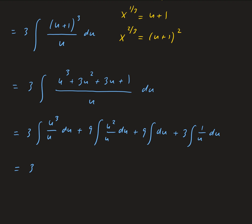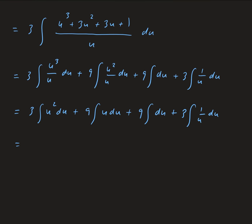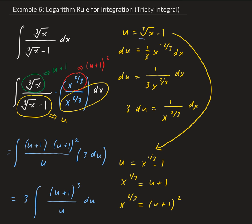Taking the integral of each term: 3 times u cubed over 3 gives u cubed. The integral of u squared over u is u, so we get 9 halves u squared. The integral of du is just u, giving 9u. And the integral of 1 over u is natural log of the absolute value of u, giving 3 times the natural log of |u|. Then we replace u with cube root of x minus 1.